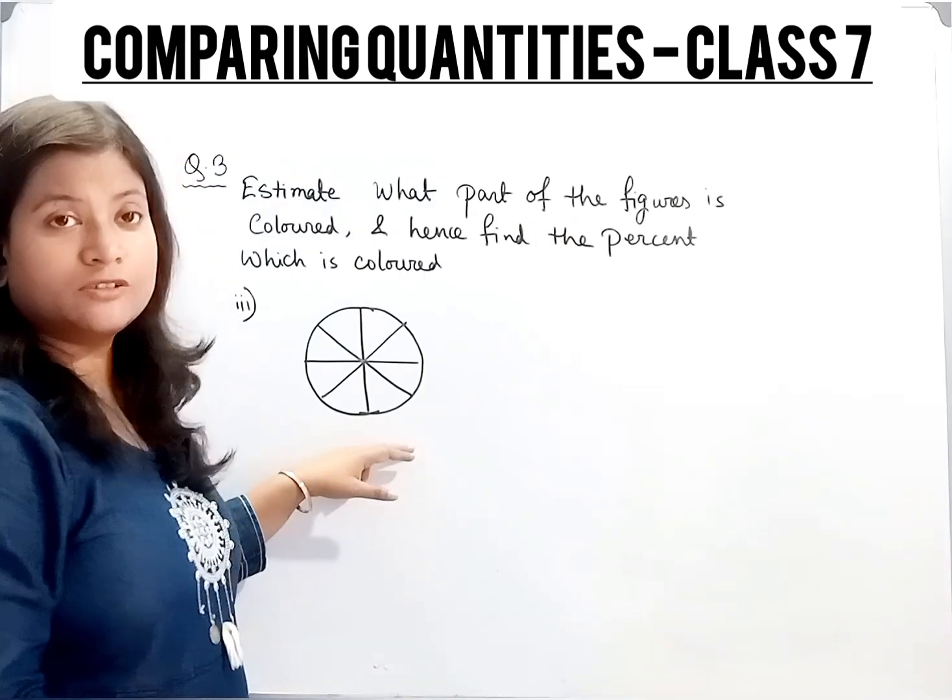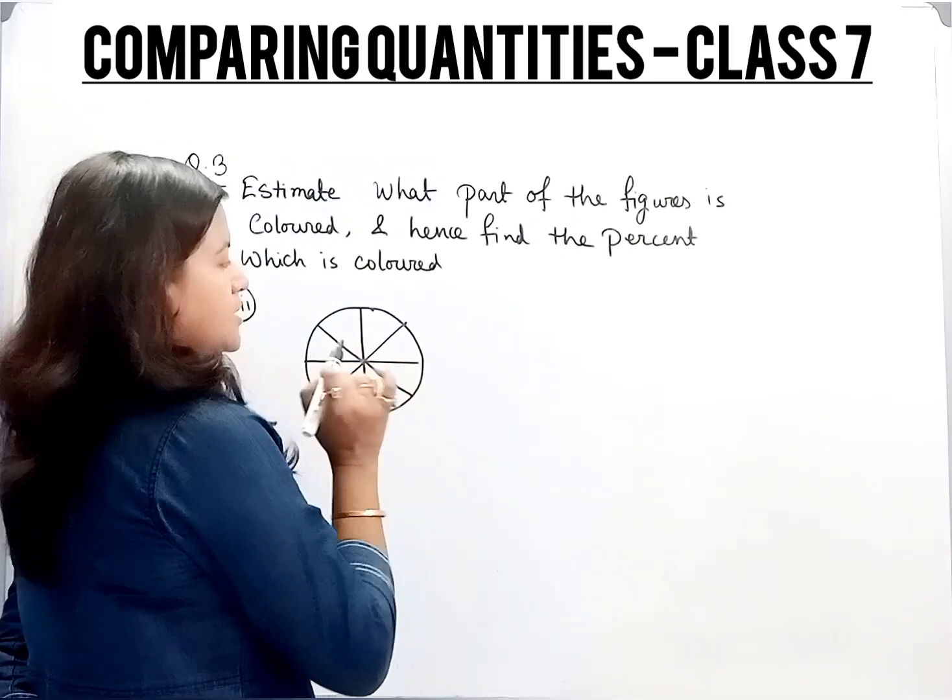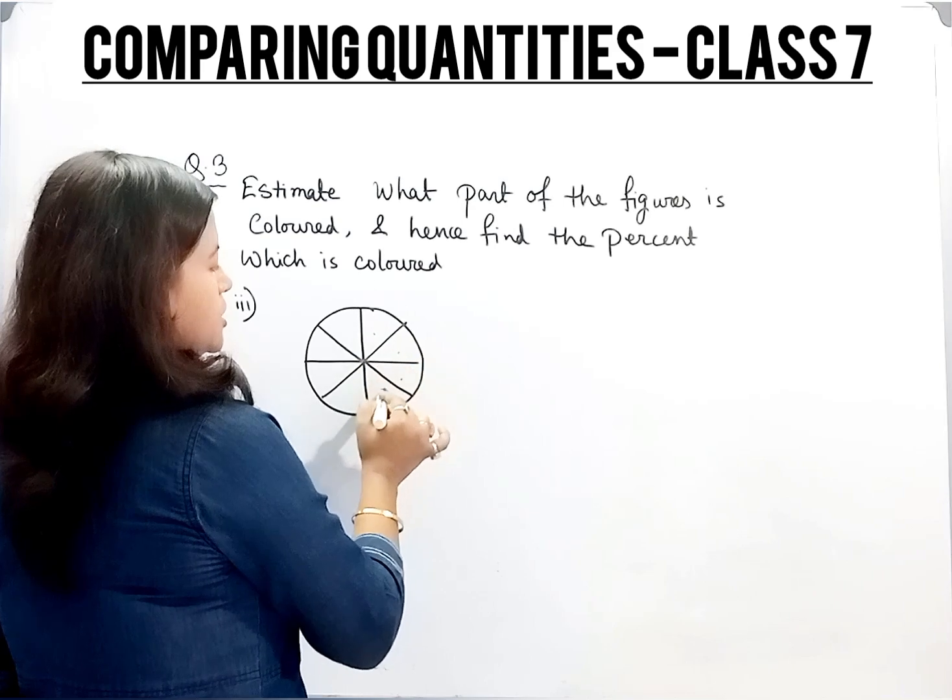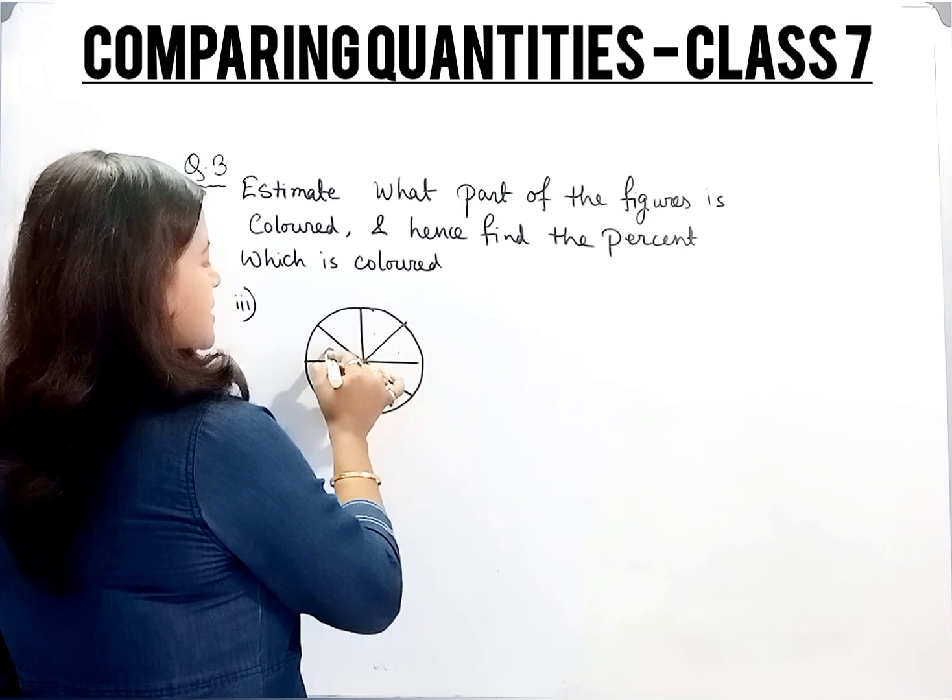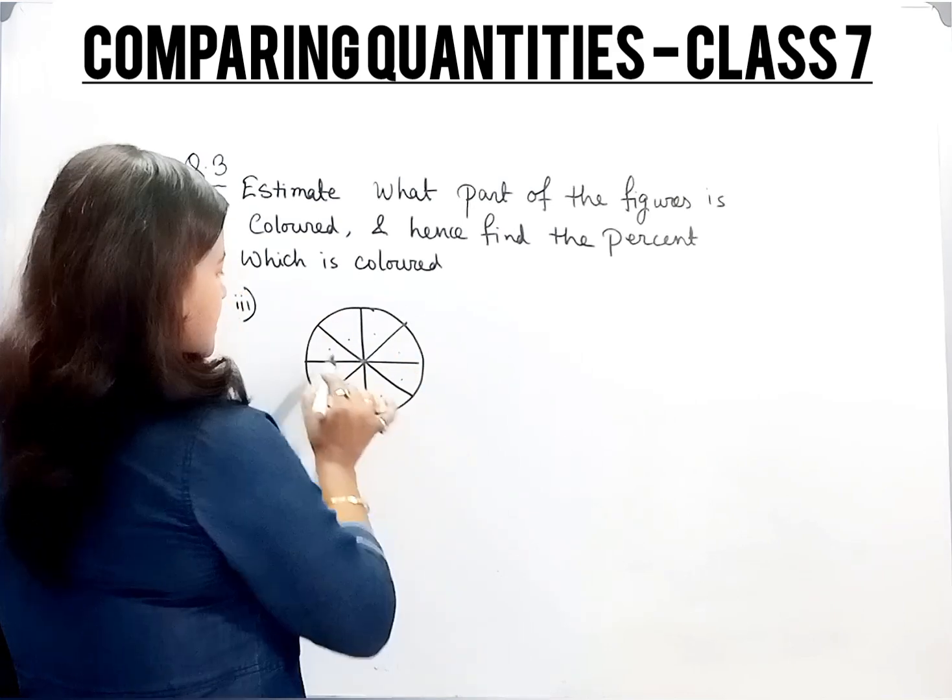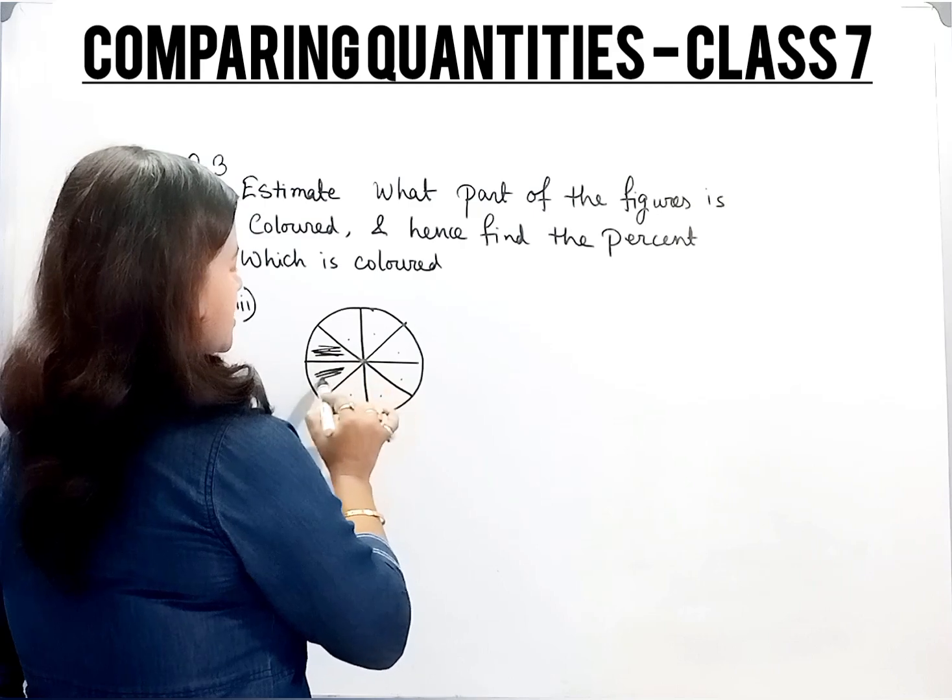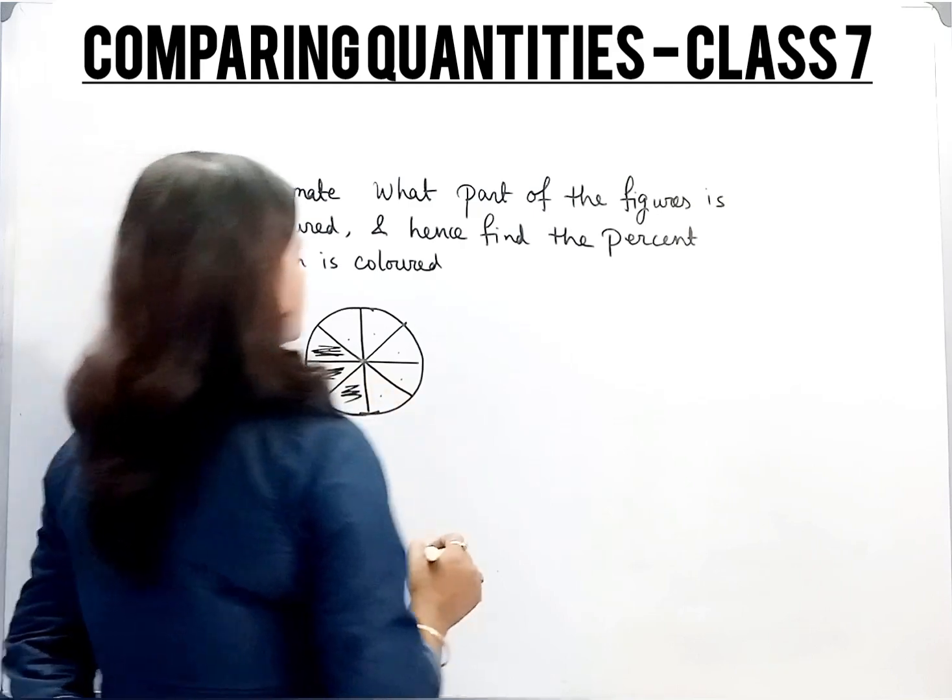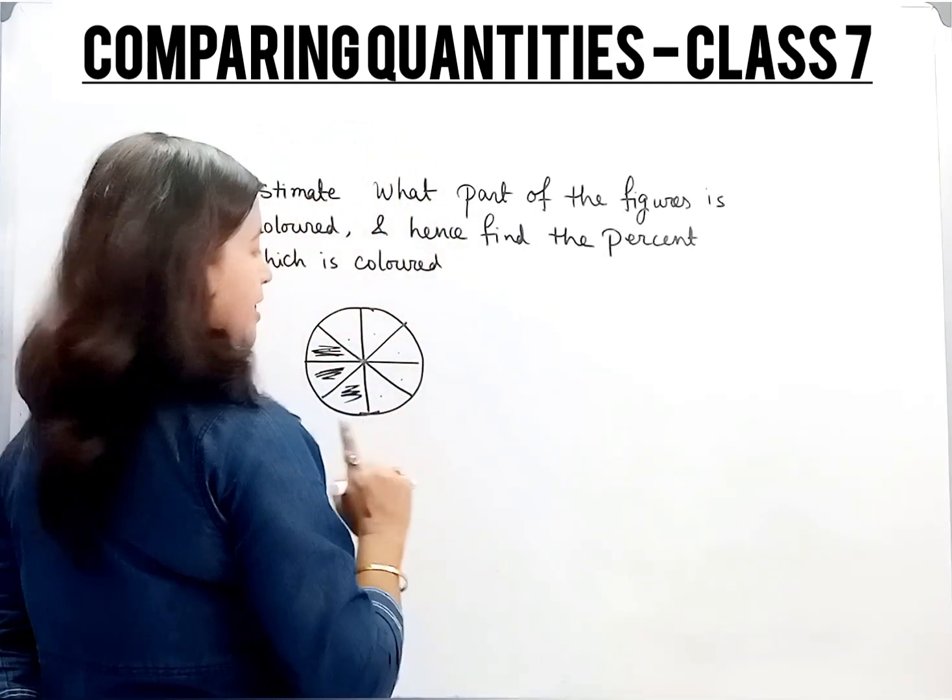Now third one. There is a circle and it is divided into 8 equal parts: 1, 2, 3, 4, 5, 6, 7, 8. Now among these 8, these 3 are shaded. So total there are 8 parts.